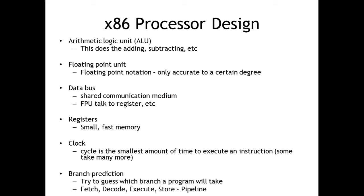We'll spend a few minutes on background information about CPU organization. There is the arithmetic logic unit, or ALU, which does all the adding, subtracting, and other mathematical operations. There's a floating point unit with its own instruction set and stack space. The data bus is a central communication pathway that allows the different units — like the ALU and registers — to communicate with each other, tying all the components together.